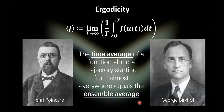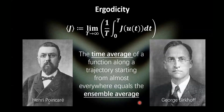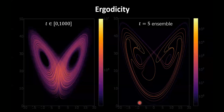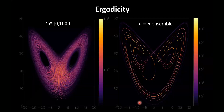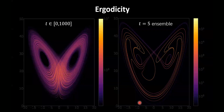So this is ergodicity. It is proven mathematically for a wide range of dynamical systems and also experimentally observed for many things, including many turbulent flows. Here I'm giving an example of ergodicity for the Lorenz equation. For the Lorenz equation, at a pretty big set of parameter ranges, you can prove ergodicity analytically.